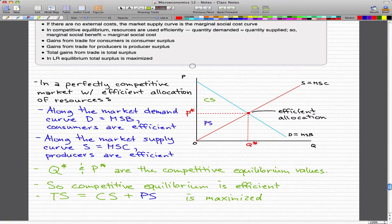Along the market demand curve, which is this blue curve, demand equals marginal social benefit—so consumers are efficient. Along the market supply curve, which is this red curve, supply equals marginal social cost—producers are efficient.